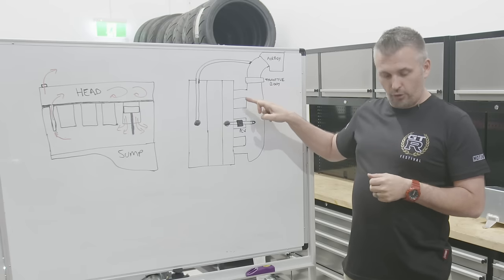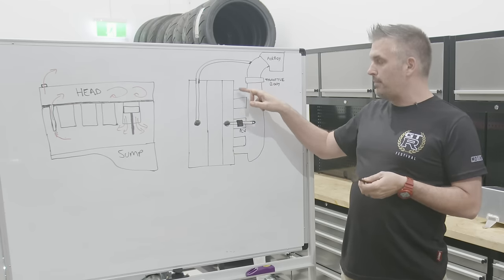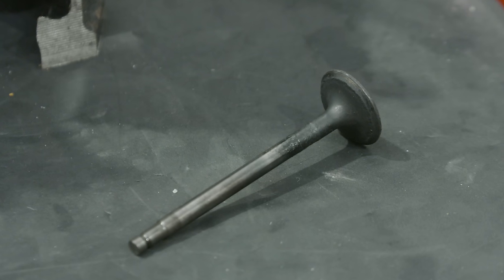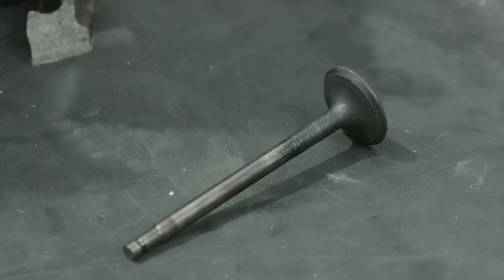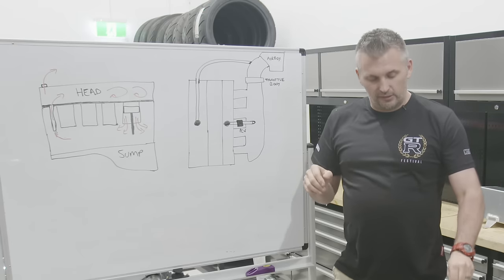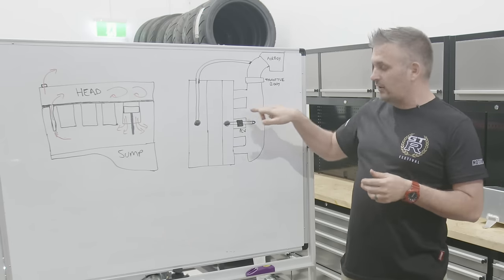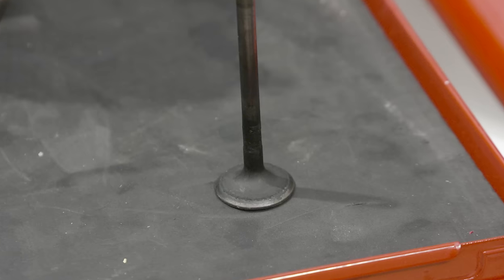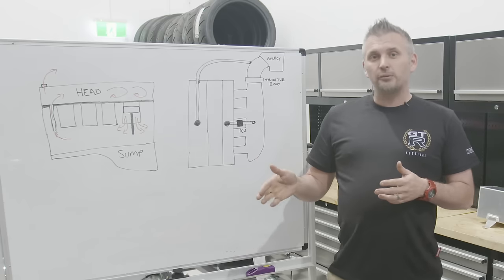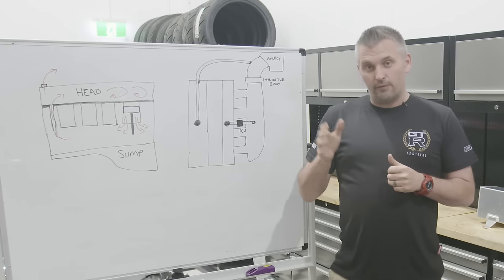Once it goes past the throttle body, those contaminants build up inside the ports and on the back of your valves. Over time it'll stop the valve from sealing properly and affect the way the air-fuel mixture moves through the ports. On a port injection car, the fuel injector spraying inside the runners can help clean some deposits off the back of a valve, but in a direct injection or diesel car you don't get that, so they suffer from carbon deposit build-up even worse.